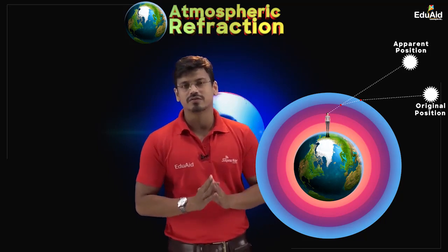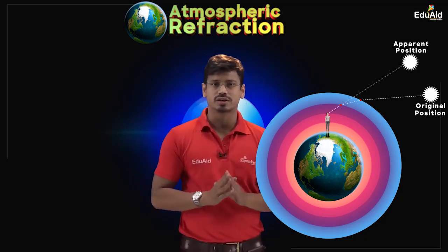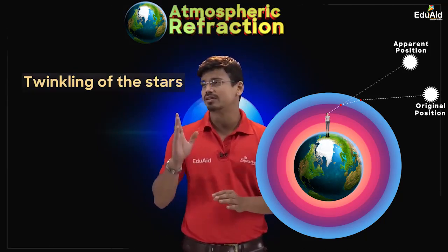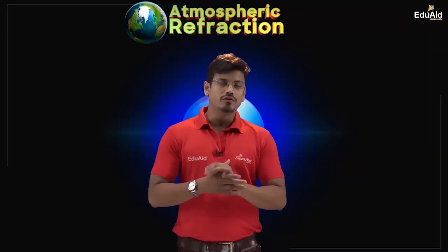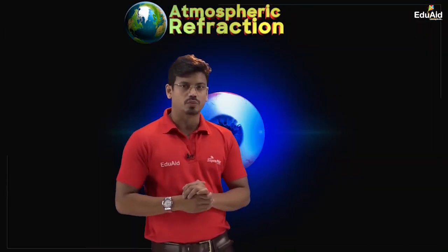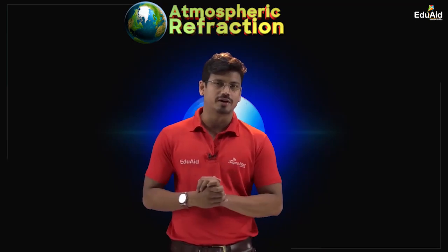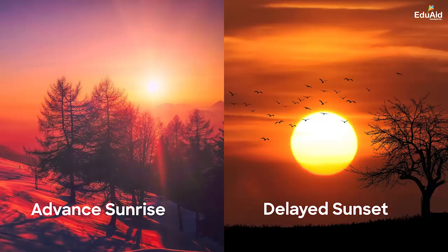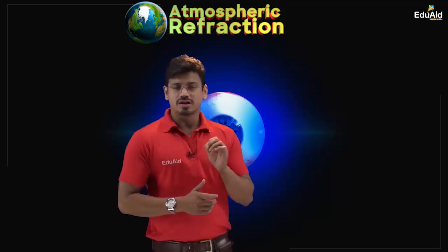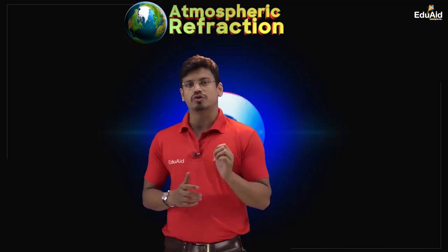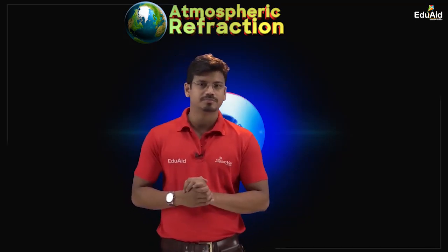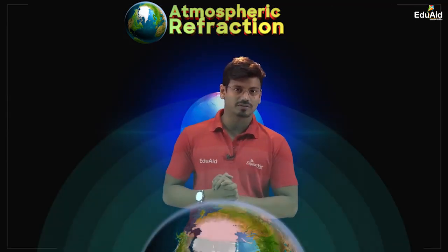This is all about the first event associated with atmospheric refraction — the twinkling of the stars. Now let us discuss the second event: the advanced sunrise and the delayed sunset. Sunrise is advanced and sunset is delayed because of atmospheric refraction of sunlight.